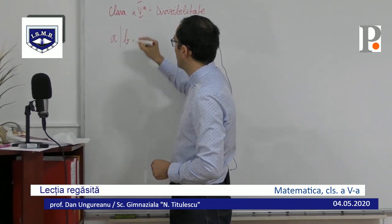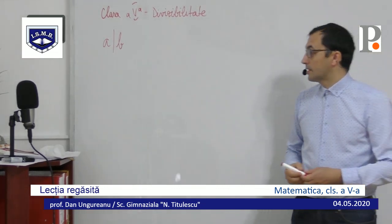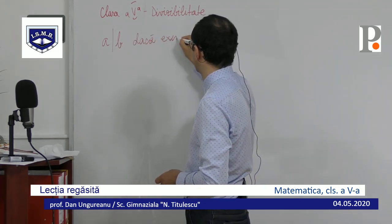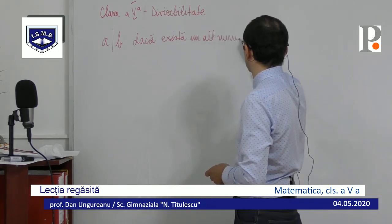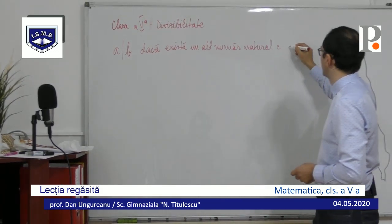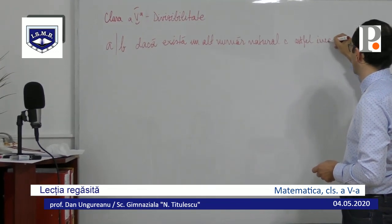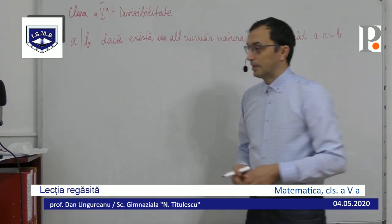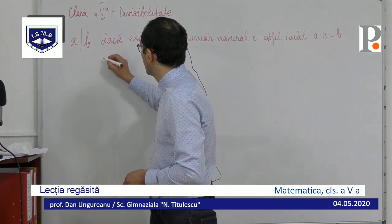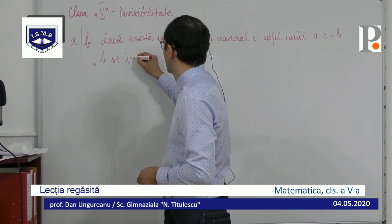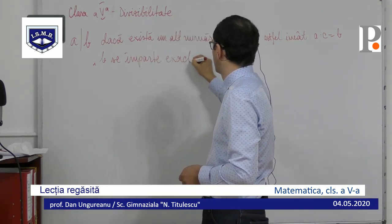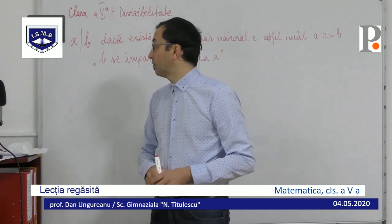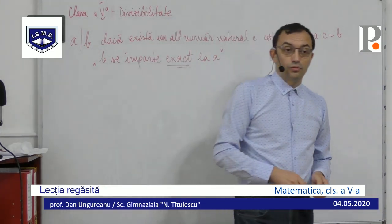În primul rând, A bară dreaptă B - cum citim și ce înseamnă? Definiția: A divide pe B dacă există un alt număr natural C astfel încât A ori C egal cu B. Asta este definiția matematică. Voi obișnuiți să o rețineți pe cea mai simplă: B se împarte exact la A. Deci atenție, în capitolul Divizibilitate nu avem numere cu virgulă, nu lucrăm cu fracții decimale, nu lucrăm cu împărțire cu virgulă, doar împărțire exactă - studiul împărțirilor exacte.